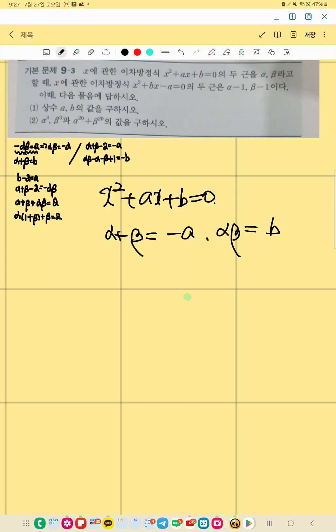Okay. And the two roots of this quadratic function, quadratic equation is like this. So adding 2, we get negative b and alpha minus 1 times beta minus 1 is negative A, right?